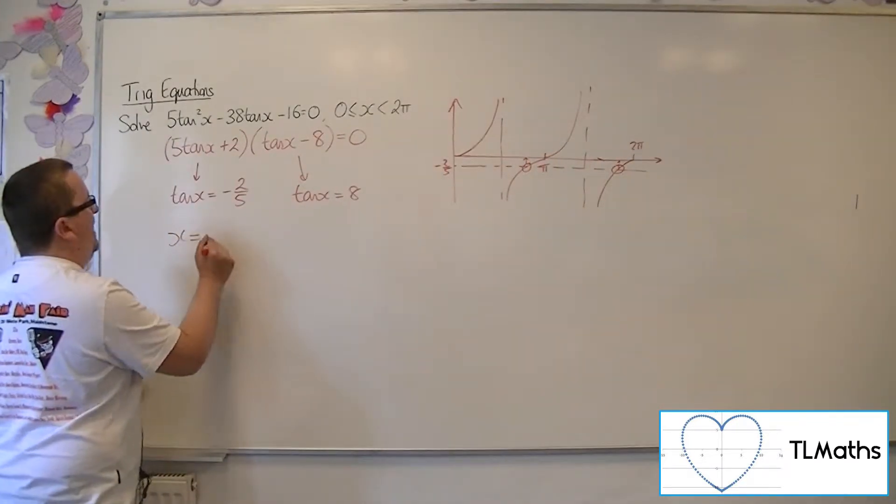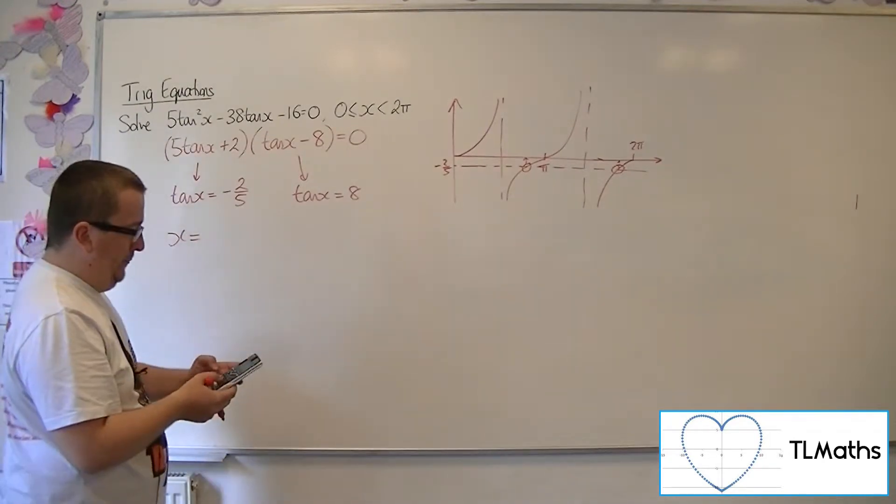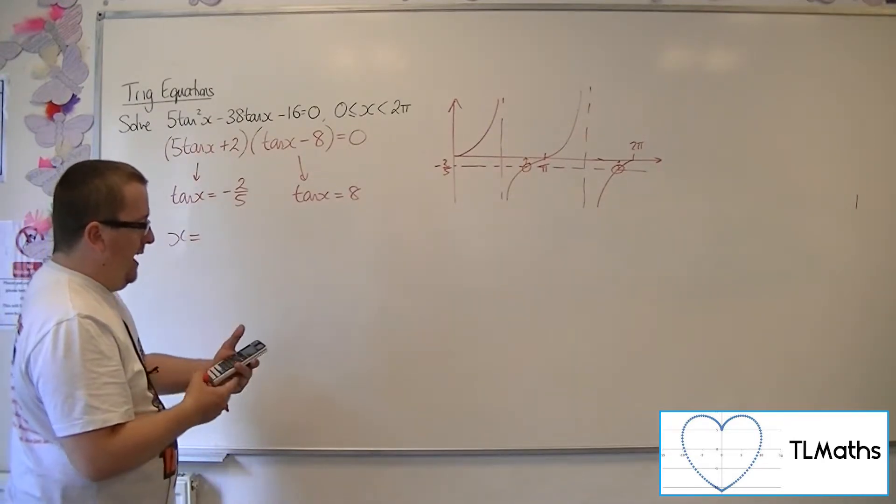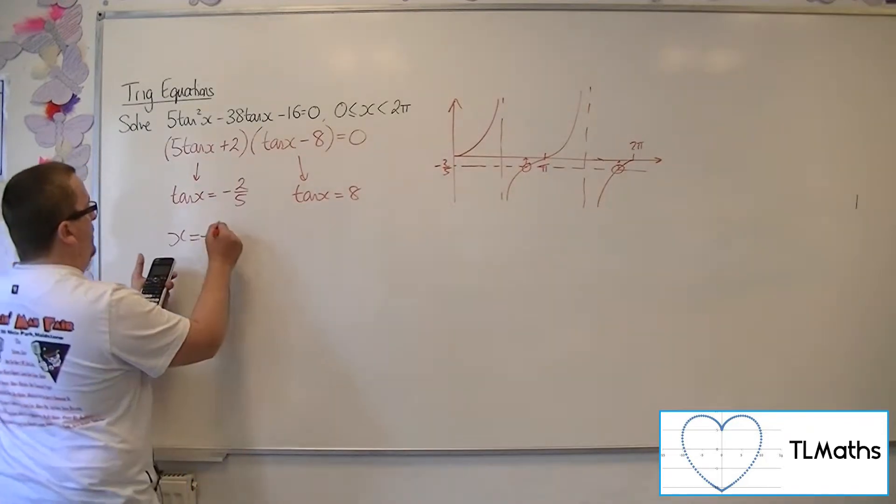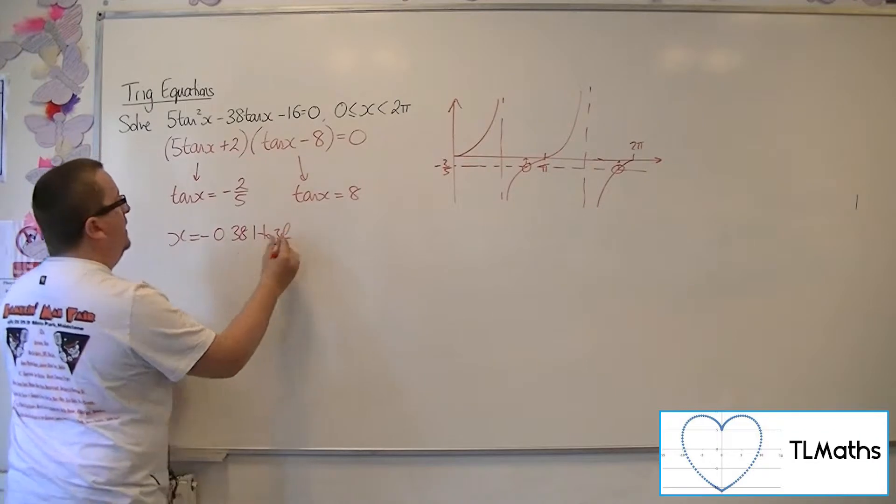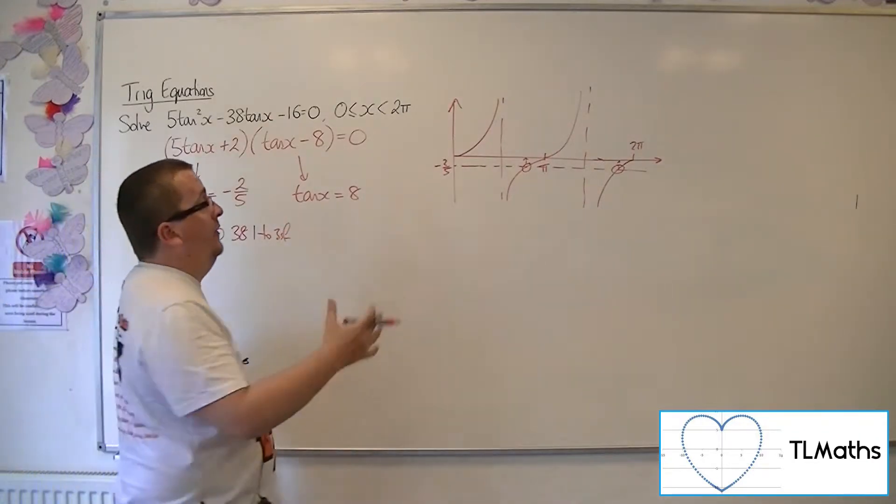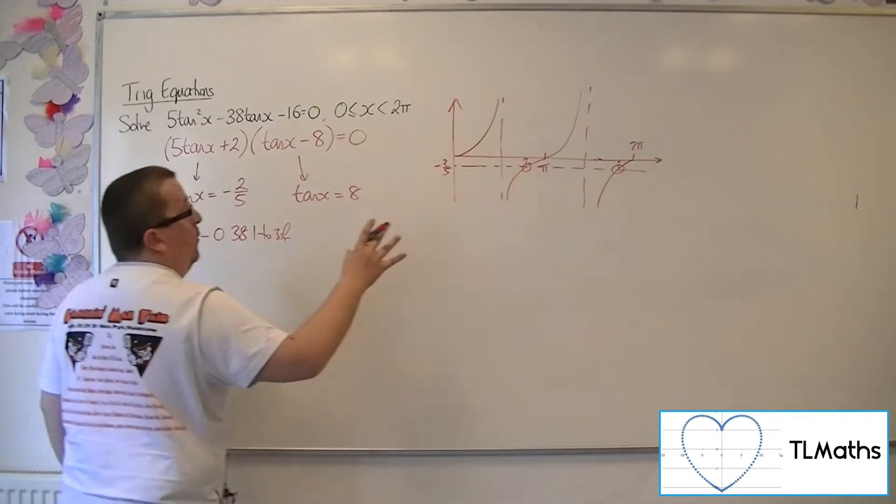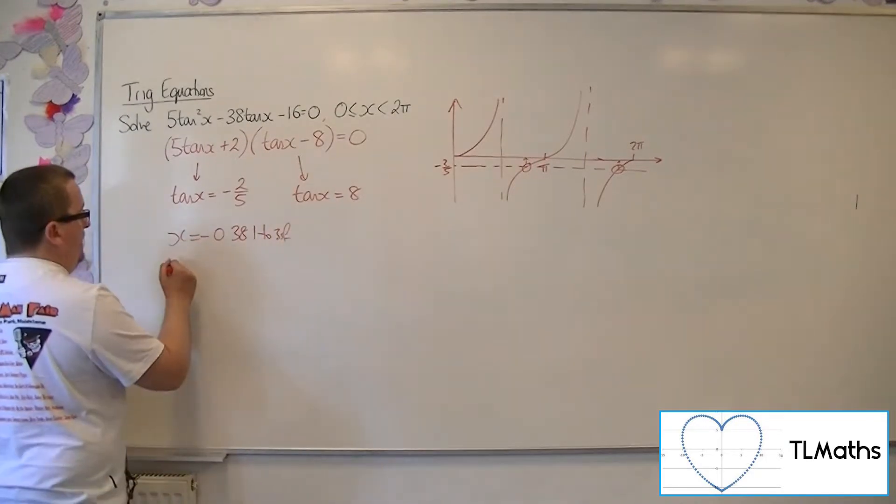So if we inverse tan both sides, we get minus 0.381 to 3 sig fig. Now clearly, that is to the left of the y-axis. This is not a solution I want. So I need to add pi to that.